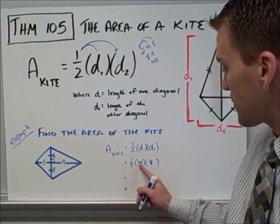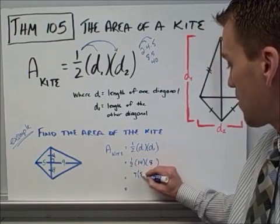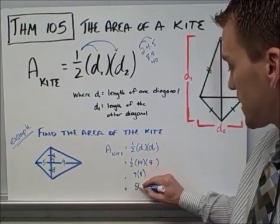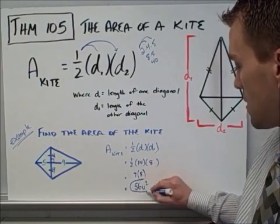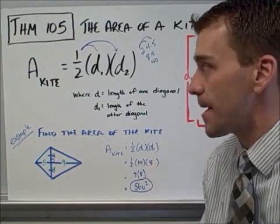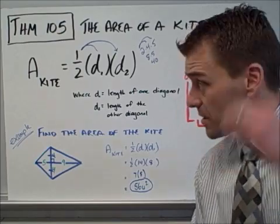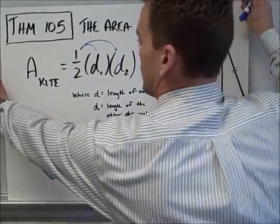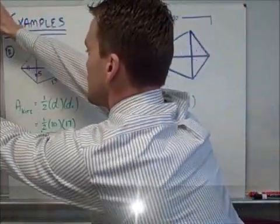Sweet. So there you go. So you can take one half times fourteen, which gives you seven. Take that times each other and you get fifty-six units squared. So that will be your simple answer to that. So next couple slides are going to be some examples. So let's go through some examples, show you how this works.